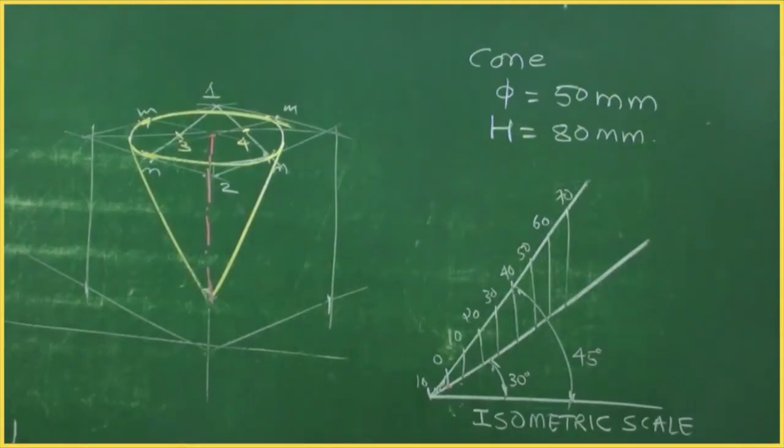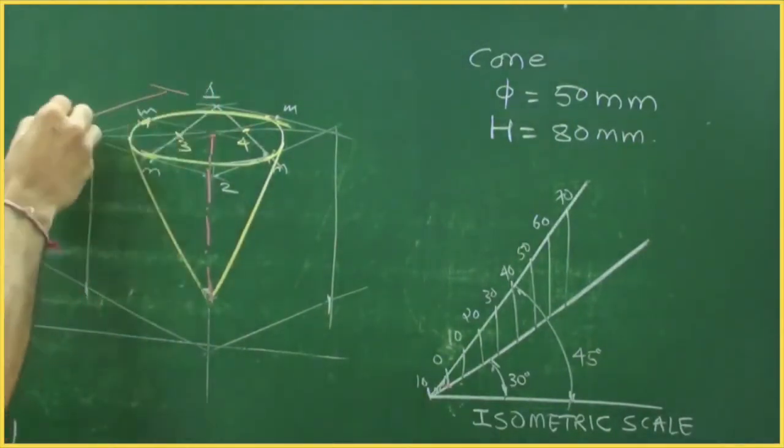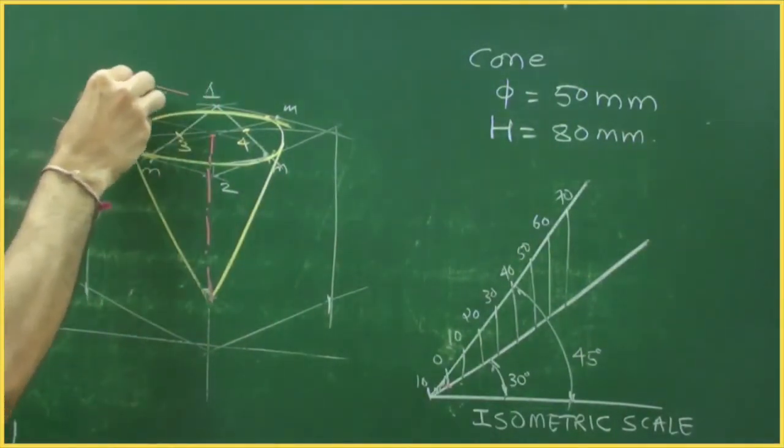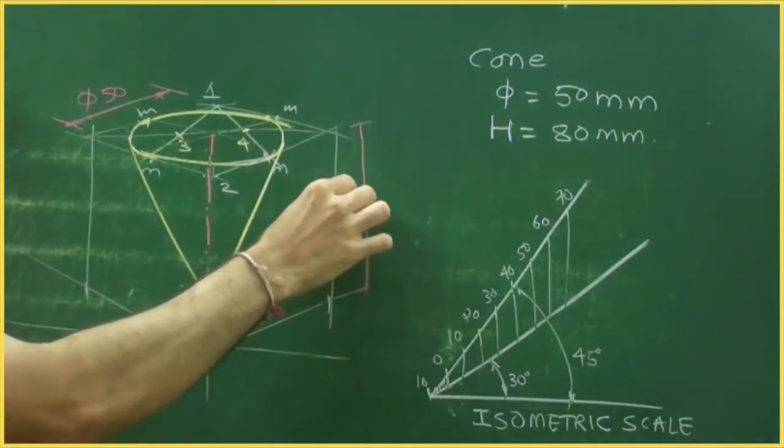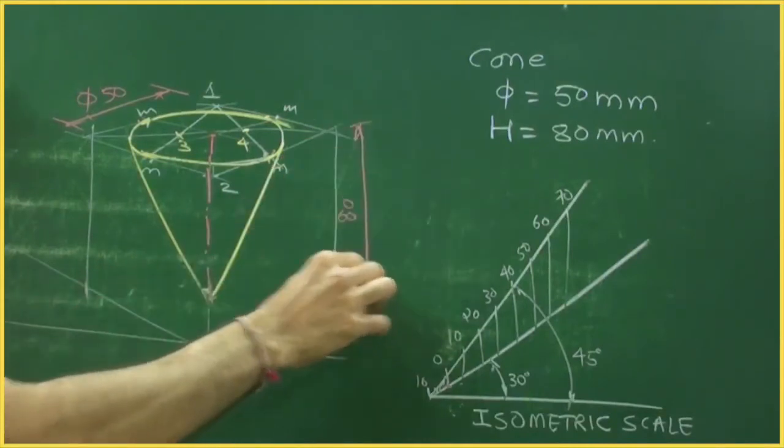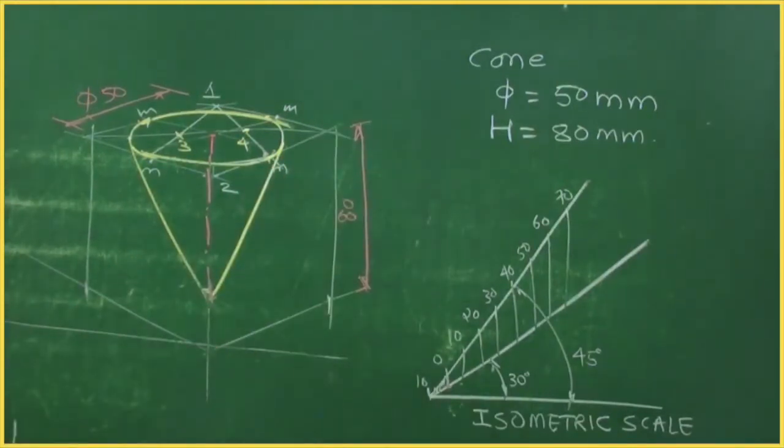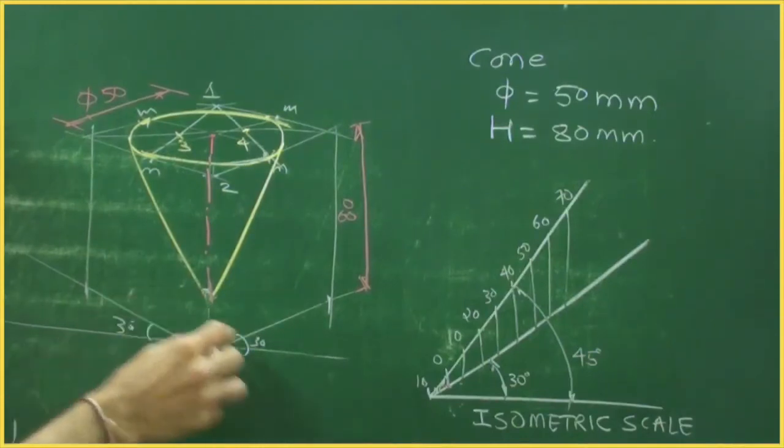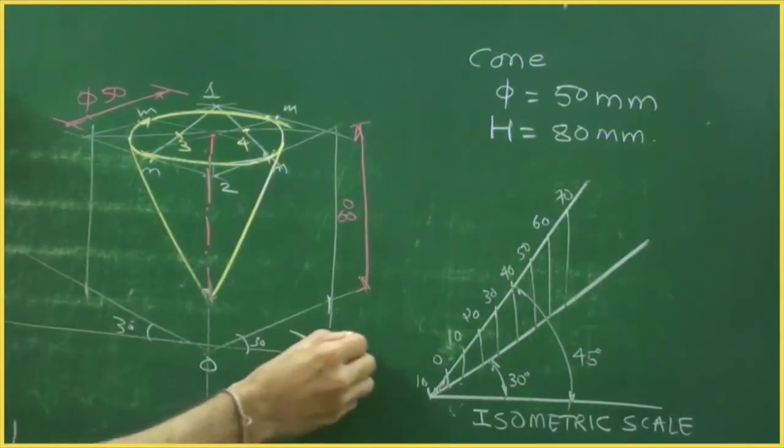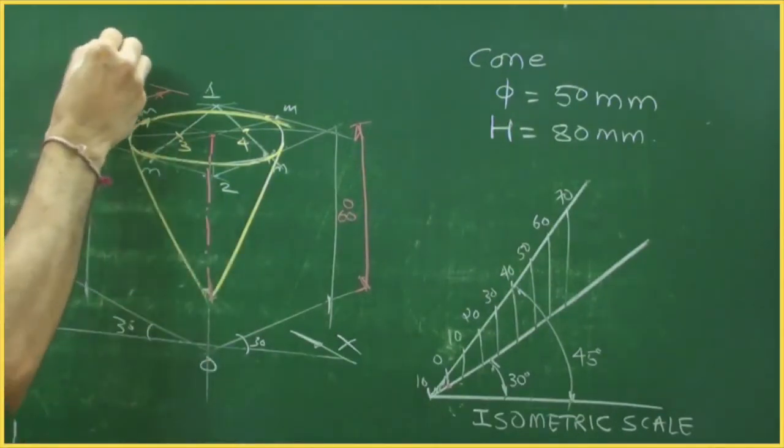So we are done with inverted cone of diameter 50 and height 80. This is origin 30, 30 degree on both the sides we have to write and observer is seeing from this direction. So this is isometric projection.